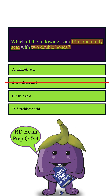How about C? Oleic acid is also an 18-carbon fatty acid, but it only has one double bond. So we can eliminate this answer choice as well.